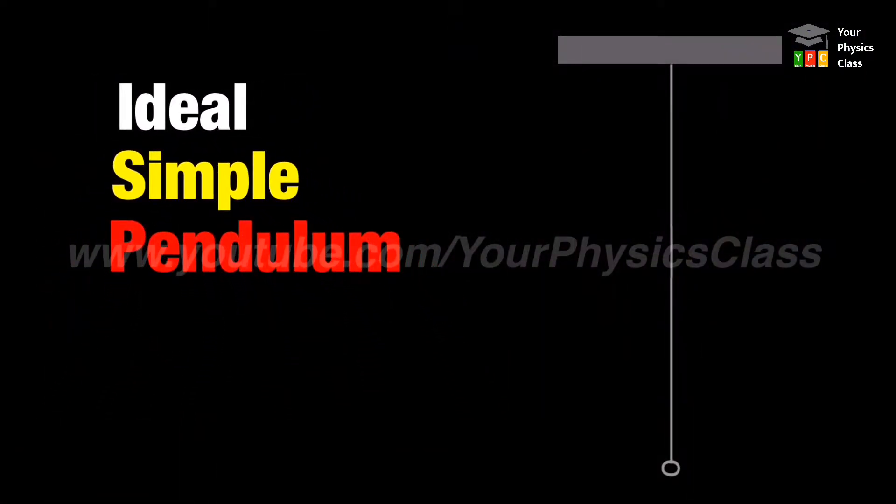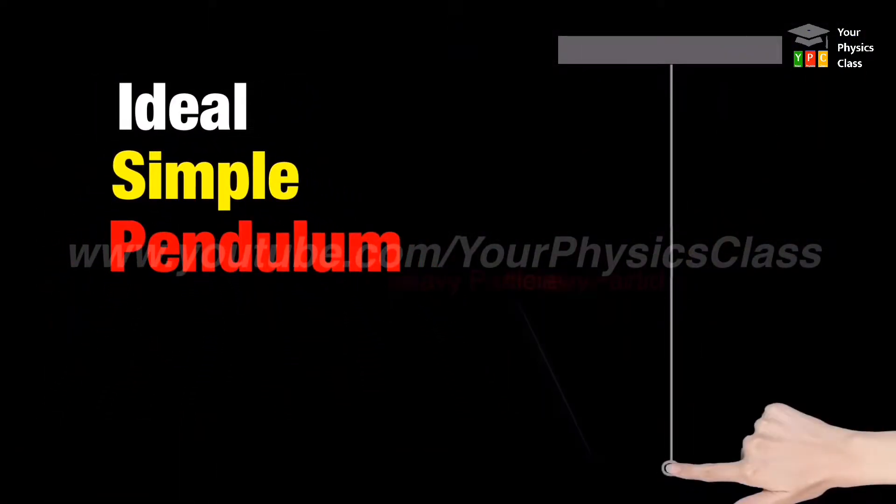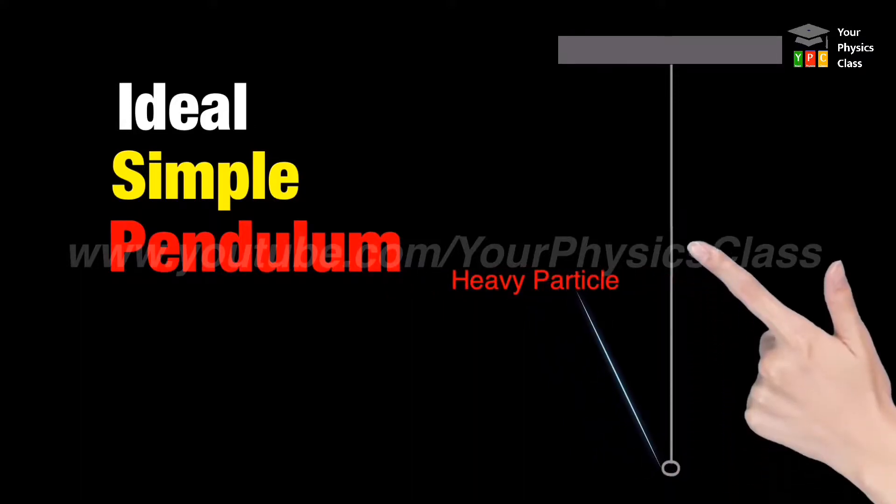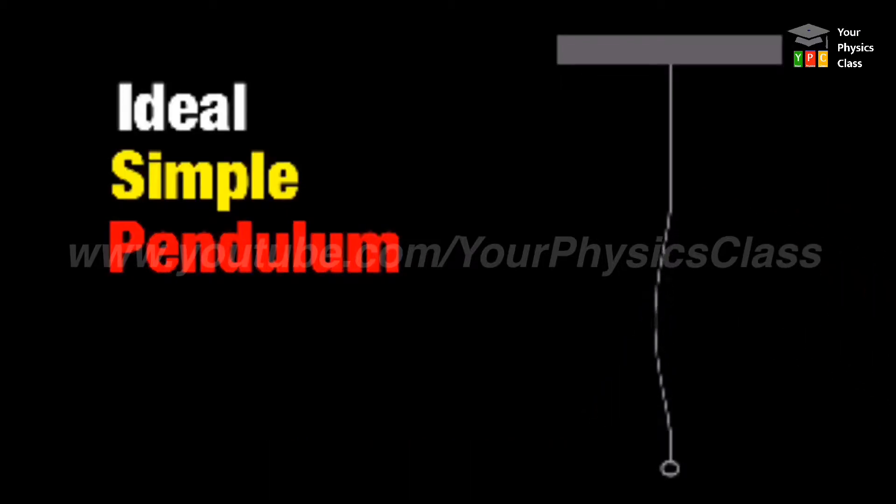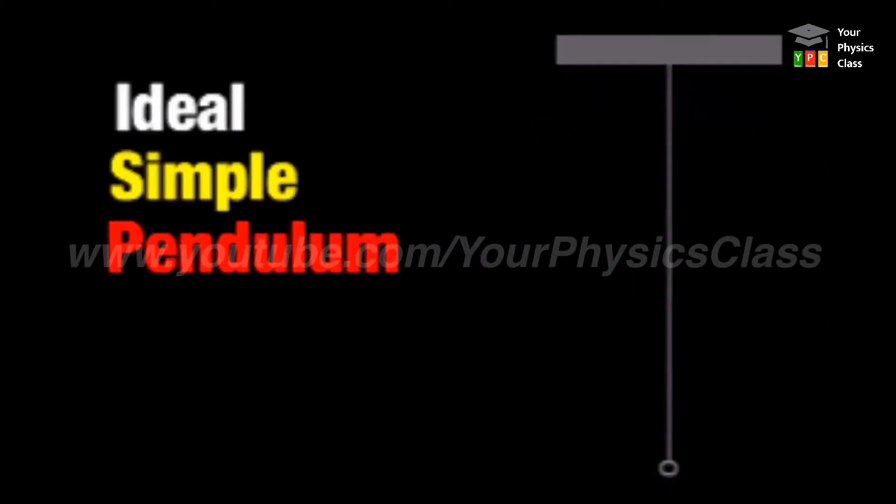Let's start with ideal simple pendulum. A system consists of heavy particle suspended by a massless, inextensible and flexible string from rigid support is called ideal simple pendulum.